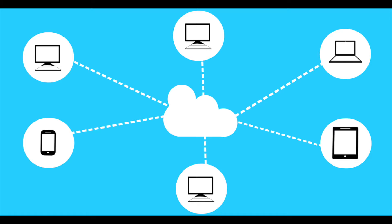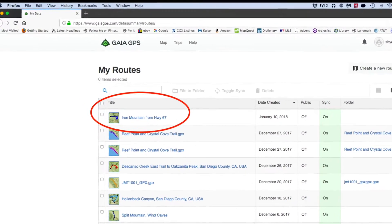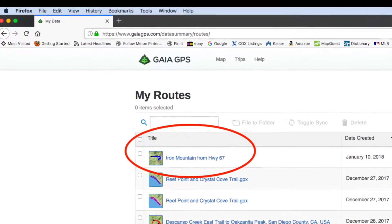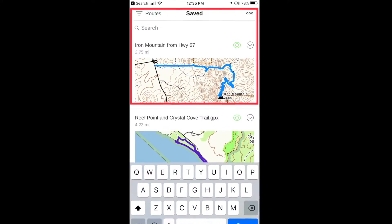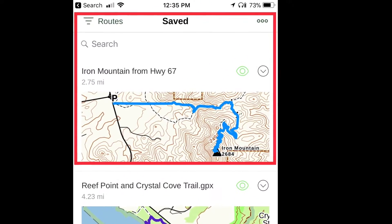Since Gaia GPS is cloud-based, wherever you plan the route — whether it's on your computer or on your phone — when you sync the Gaia GPS app on your phone, the route will be saved in both places. It will be in your account at GaiaGPS.com and in your Gaia GPS app on your phone.